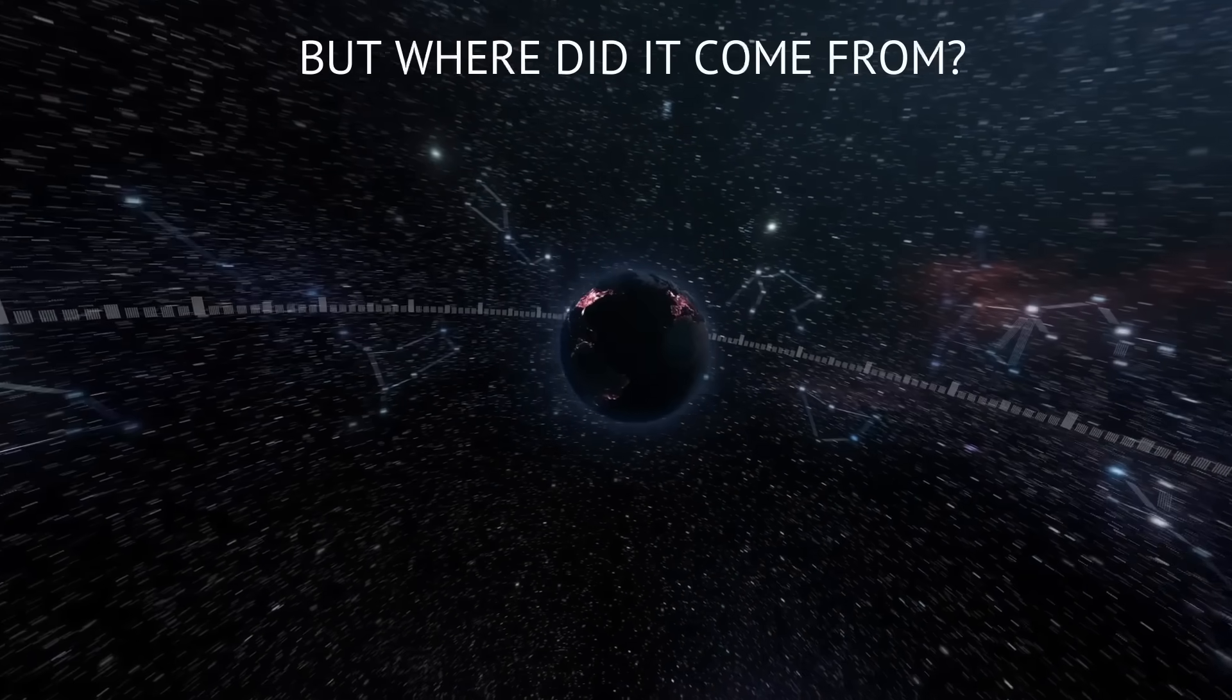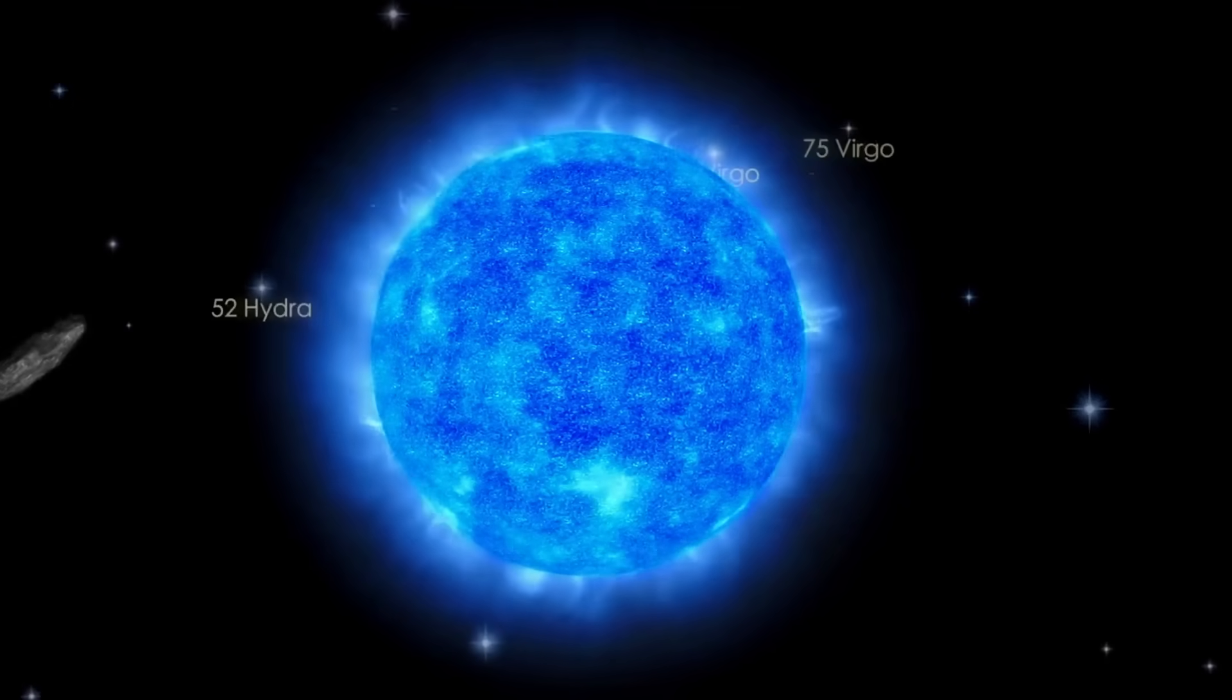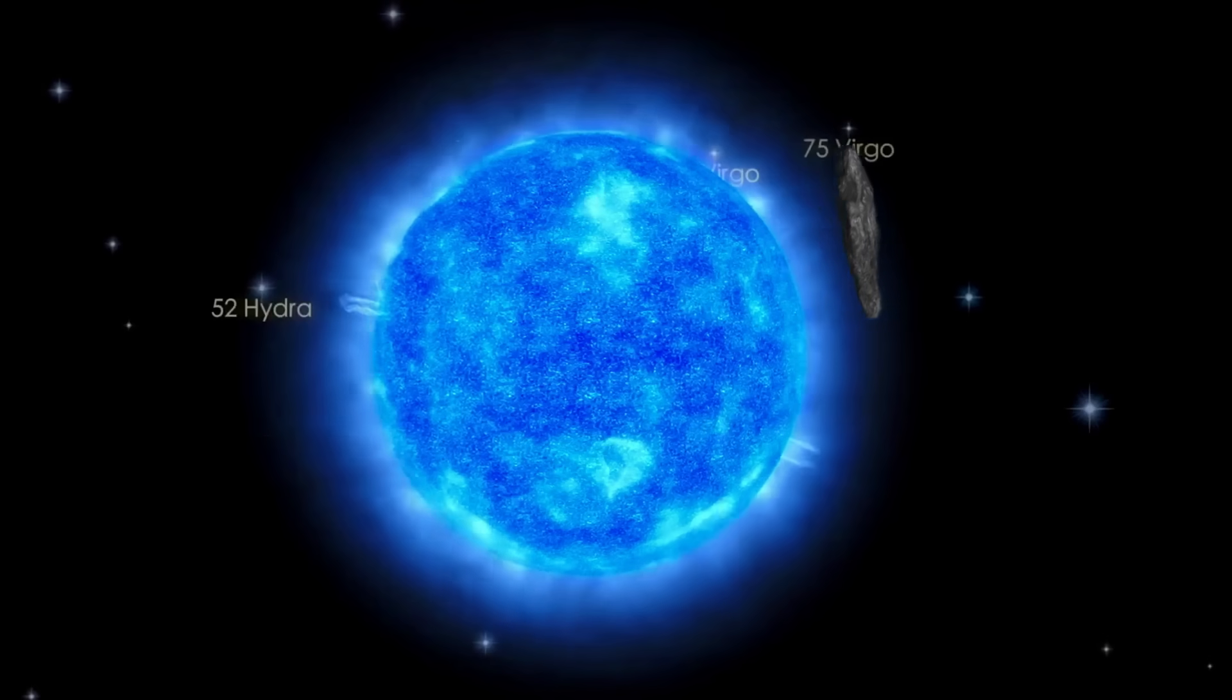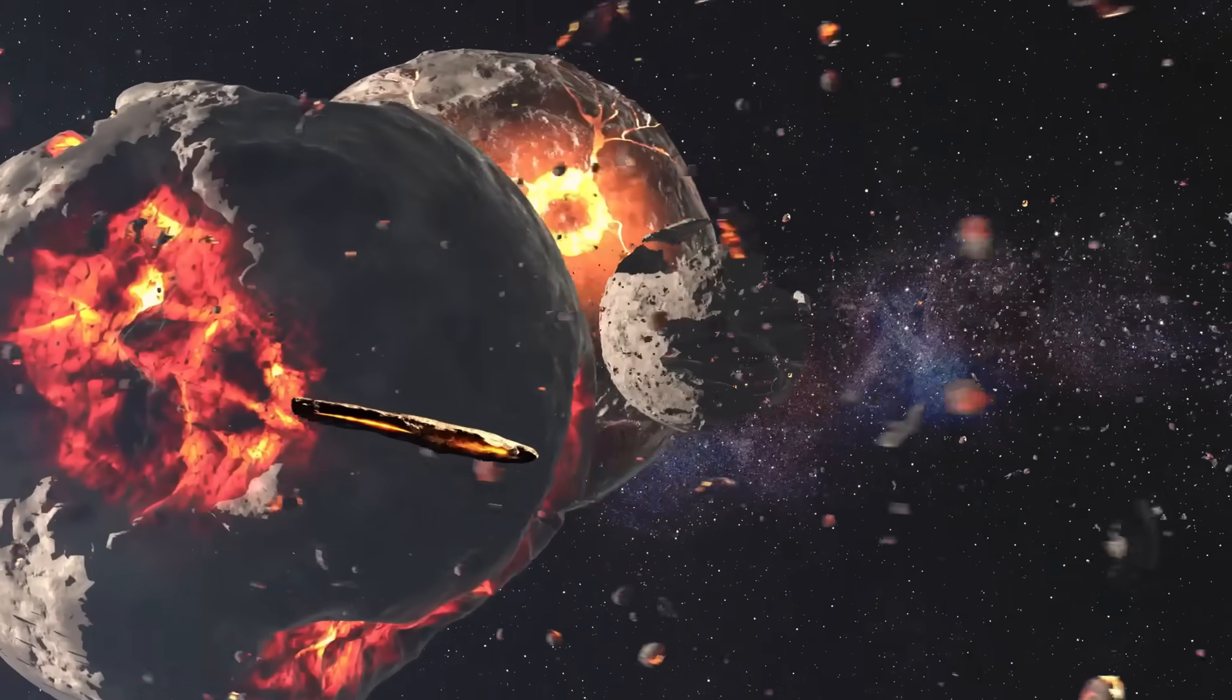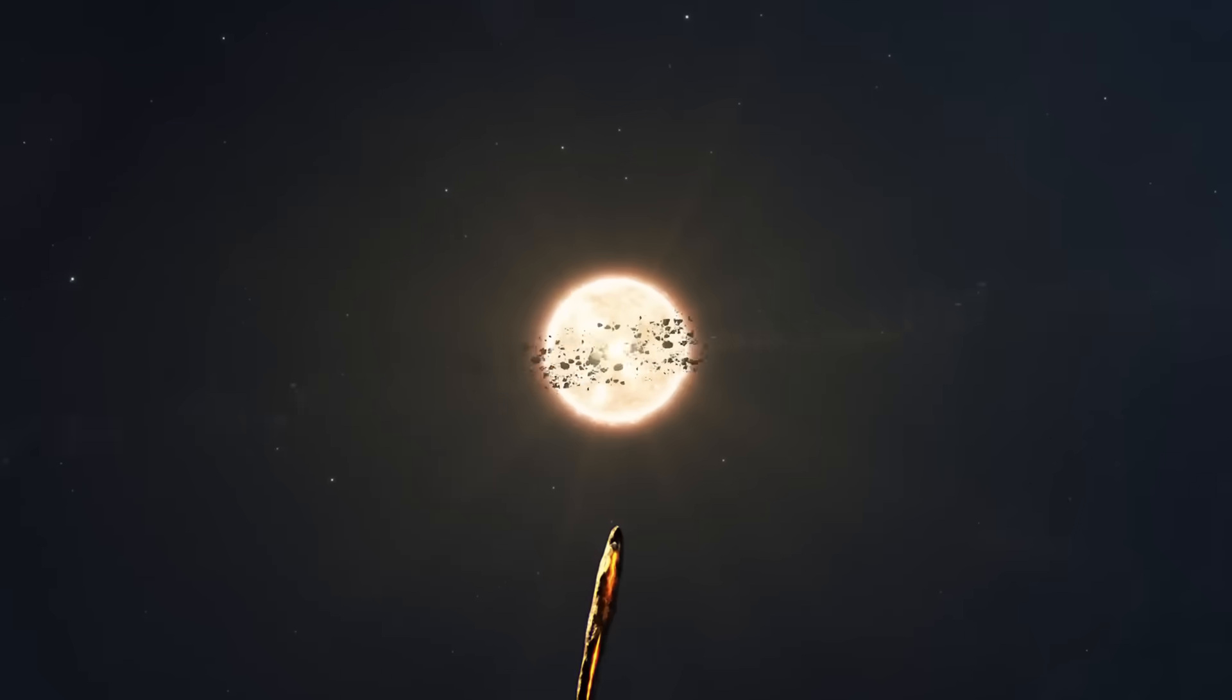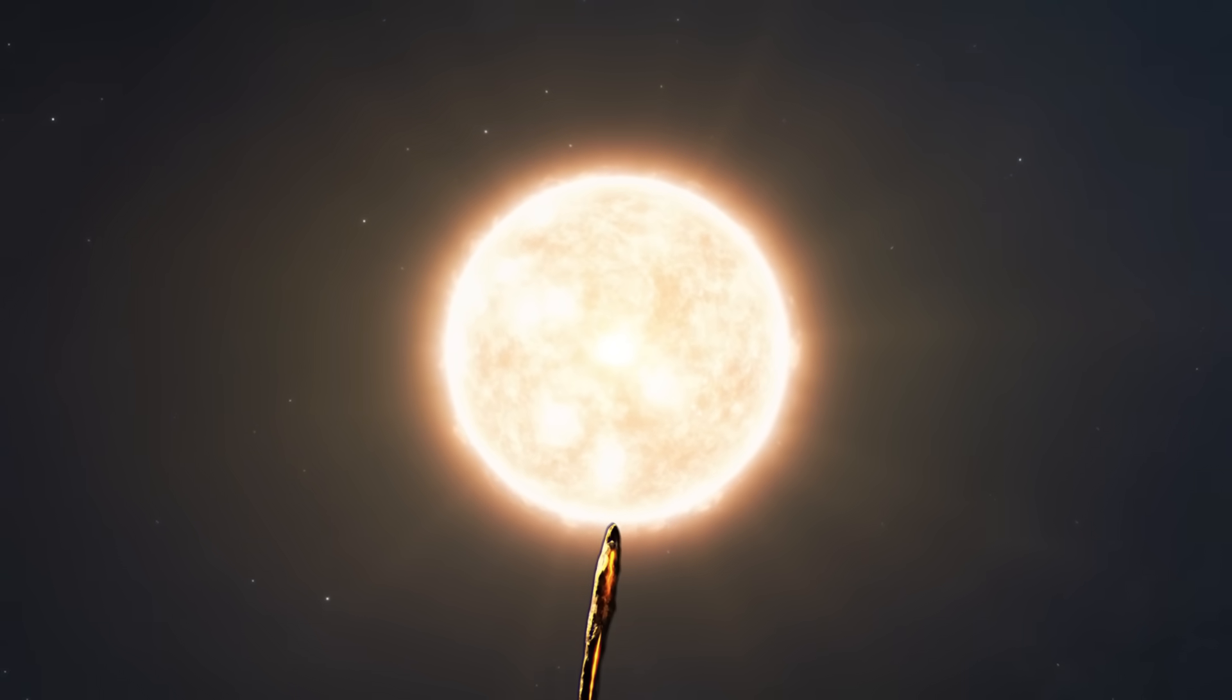Now, backtracking that path through stellar maps is like trying to trace a single raindrop to the cloud. After tens or hundreds of millions of years adrift, gentle tugs from passing stars and galactic tides had blurred the trail. It is possible that in the turbulent youth of a distant planetary system, migrating giant planets hurled the fragment into interstellar space, where it drifted for ages until, by sheer luck, it crossed our neighborhood in 2017. Or is it?